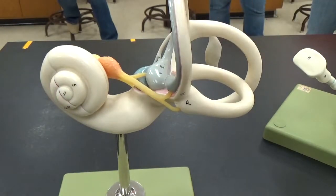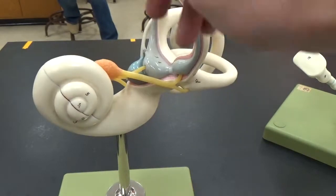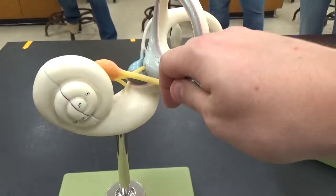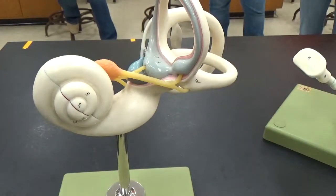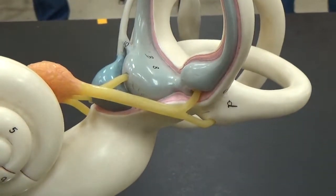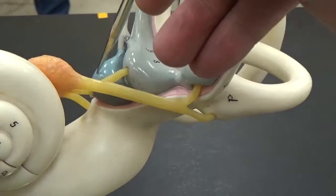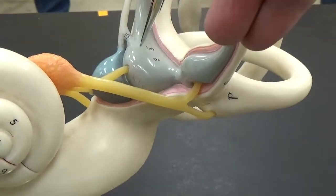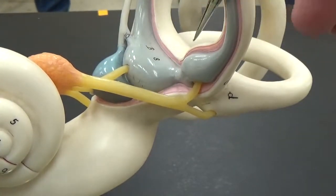The bony labyrinth is actually made up of these membranes here on the inside. We've got three distinct regions of these membranes. They're swollen parts of that membrane themselves. You have the saccule, the utricle, and the ampulla.